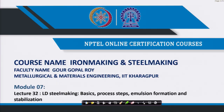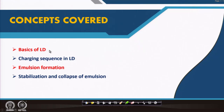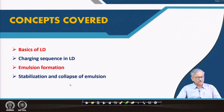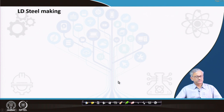In this lecture I will discuss LD steel making. First we discuss the basics of steel making, process steps, emulsion formation and stabilization. I will first discuss the basics of LD, then the charging sequence in LD — how the scrap and the hot metal is charged and in which sequence — and then we will talk about emulsion formation, which is the major mode of refining in LD, and then stabilization and collapse of emulsion, because emulsion is very essential for fast LD refining.